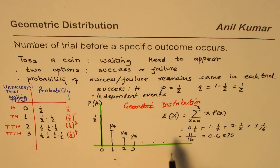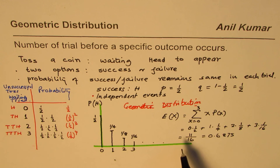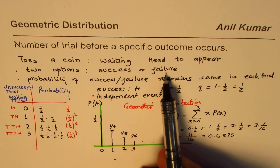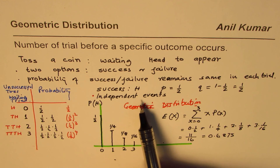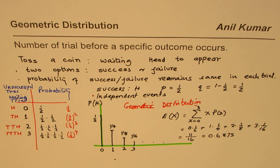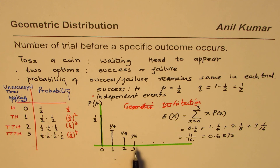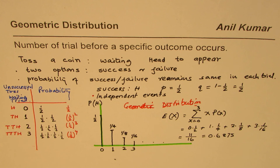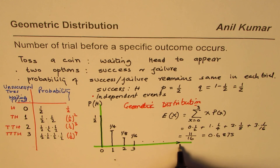The idea here is that in cases where waiting periods are involved, we have an experiment with two options — success or failure — each event is independent, and the probability of success remains constant. In that case we are looking for a geometric distribution. We will take more examples to find probabilities, expectancy, and explore this further. I am Anil Kumar — I hope that brief description helps you understand the topic. Thank you and all the best.